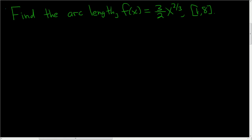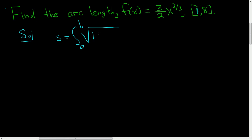We have to find the arc length of this function from 1 to 8. The formula for the arc length of a curve from a to b is the integral of the square root of 1 plus the derivative of f squared, dx.